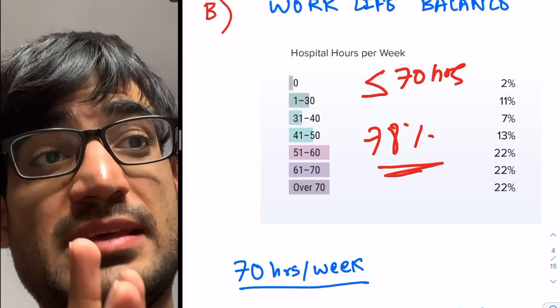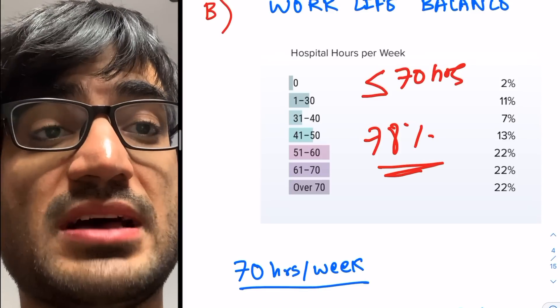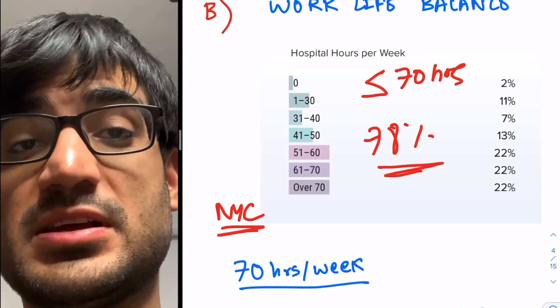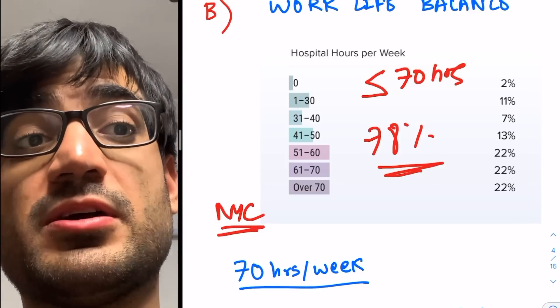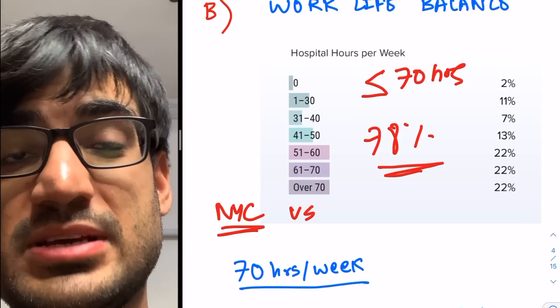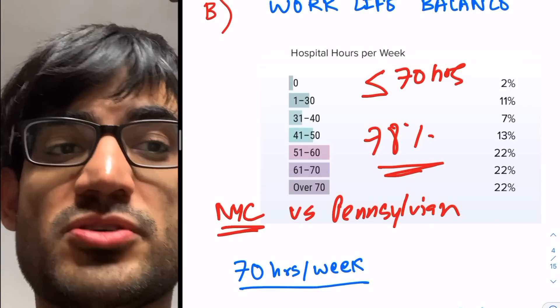Second thing to consider is hospital hours per week also differs location by location. For example, if you're in New York City, where there's just so many patients to serve, there are so many people to serve, you'll be working a lot versus in Pennsylvania, or where the population isn't much, like New Hampshire. University programs, you work a bit less compared to community programs.